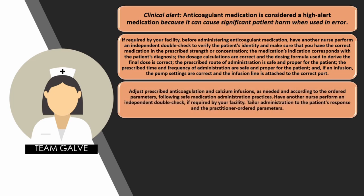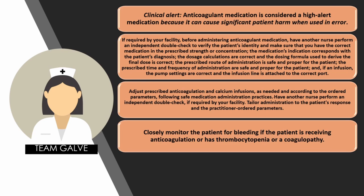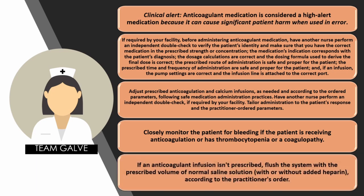Adjust prescribed anticoagulant and calcium infusions as needed according to the ordered parameters, following safe medication administration practices, and have another nurse perform an independent double check if required by your facility. Tailor administration to the patient's response and practitioner order parameters. Closely monitor the patient for bleeding if receiving anticoagulant or if the patient has thrombocytopenia or coagulopathy — close monitoring for any signs of internal and external bleeding. If an anticoagulant infusion is not prescribed, flush the system with the prescribed volume of normal saline with or without added heparin, as per the practitioner's order.